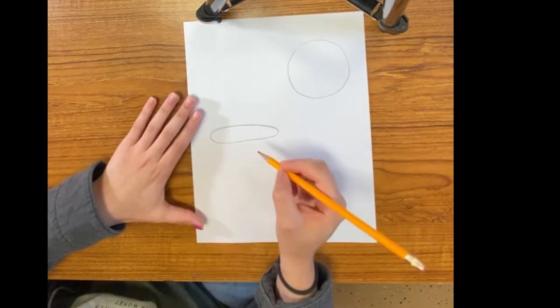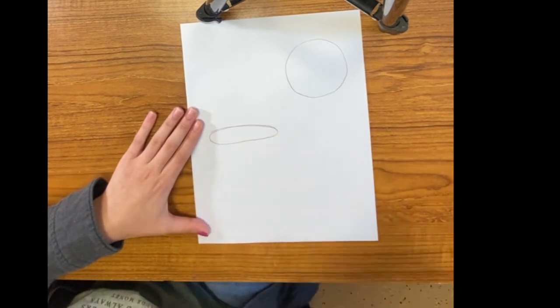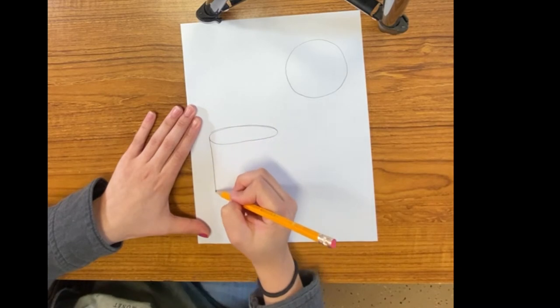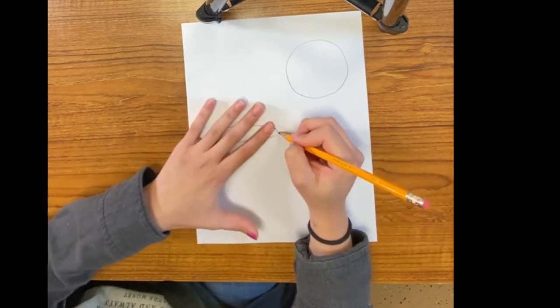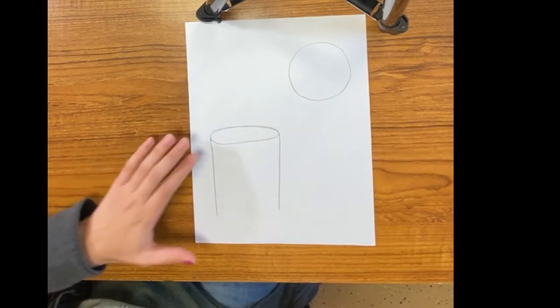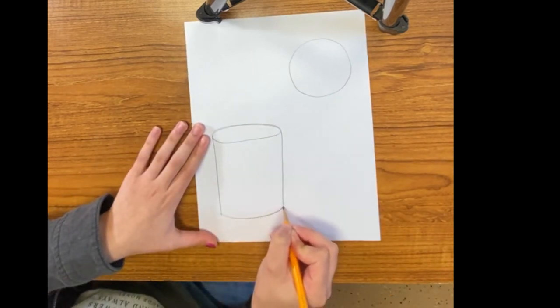Circle, oval. Remember, your lines don't have to be perfect. Now we're going to make a nice vertical line going down, not all the way down, but most of the way. Same on the other side, about equal length. And then we like to close that off.